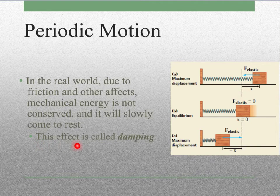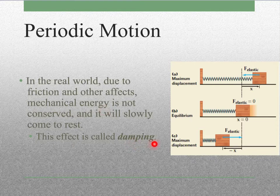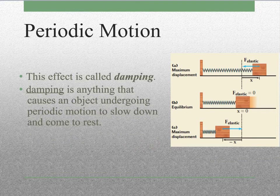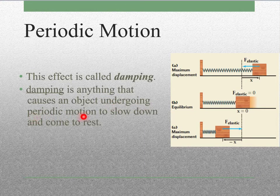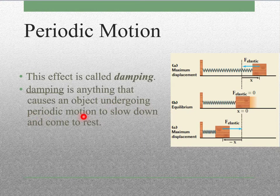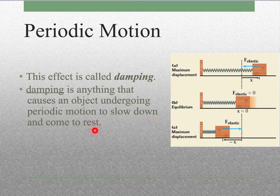This effect, where mechanical energy is not conserved, is called damping. Damping is anything that causes an object undergoing periodic motion to slow down and come to a rest. Friction is one of the biggest causes of damping.